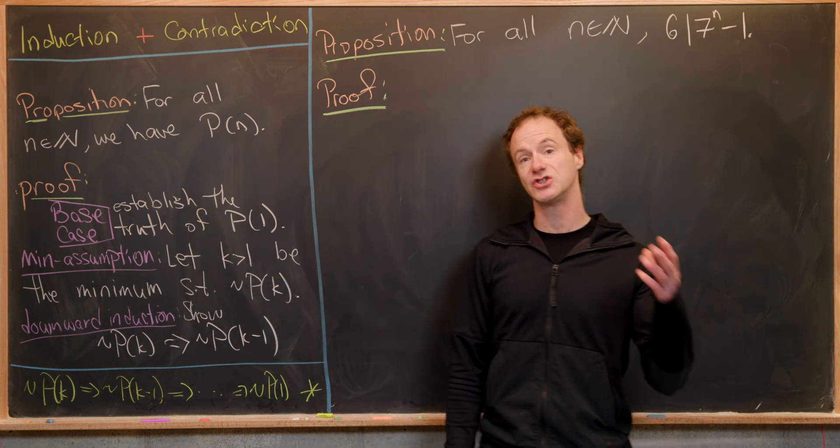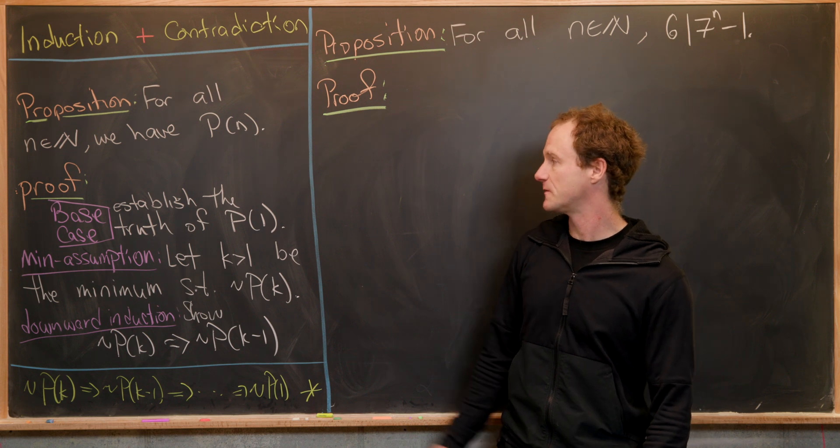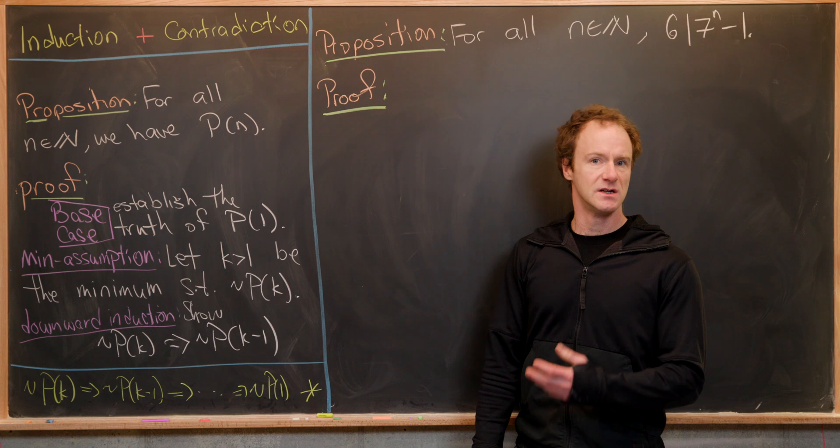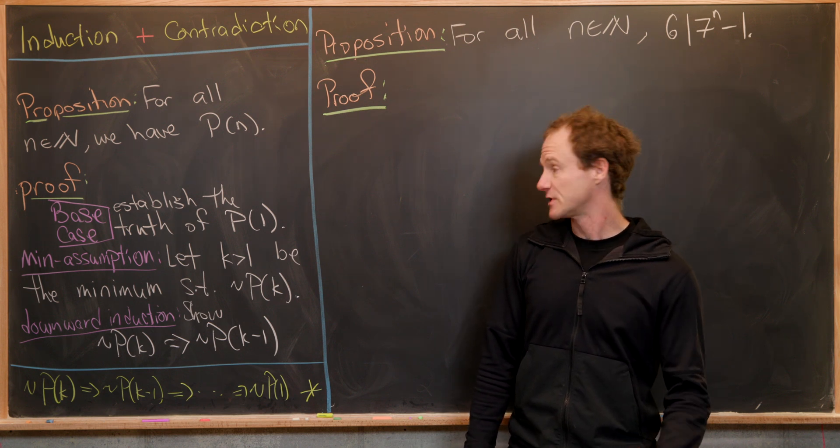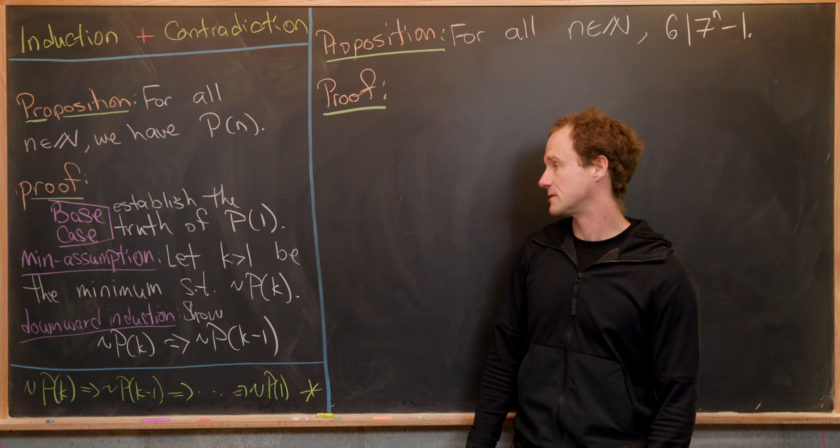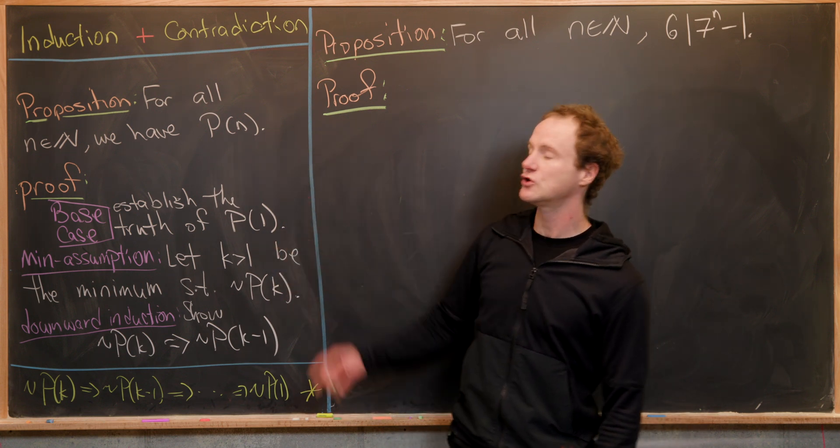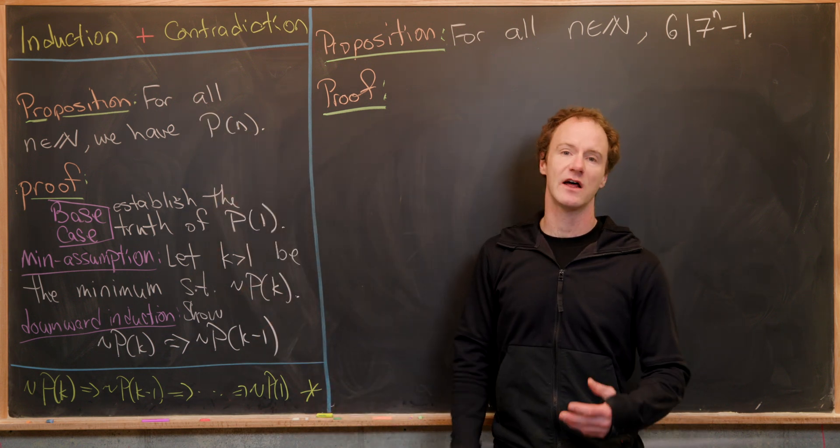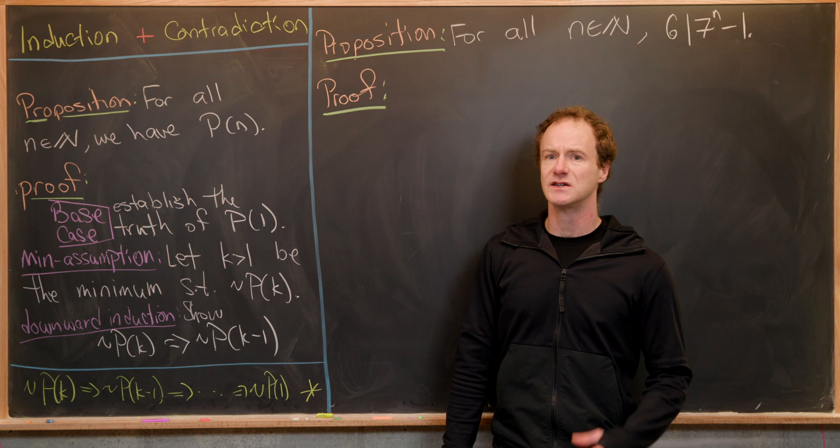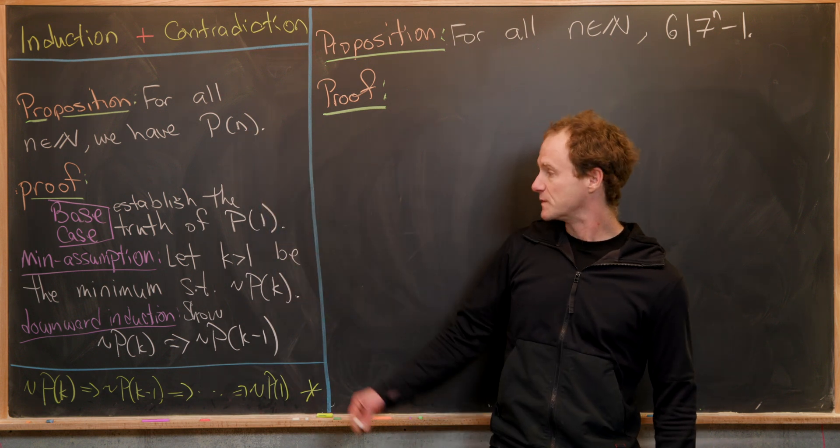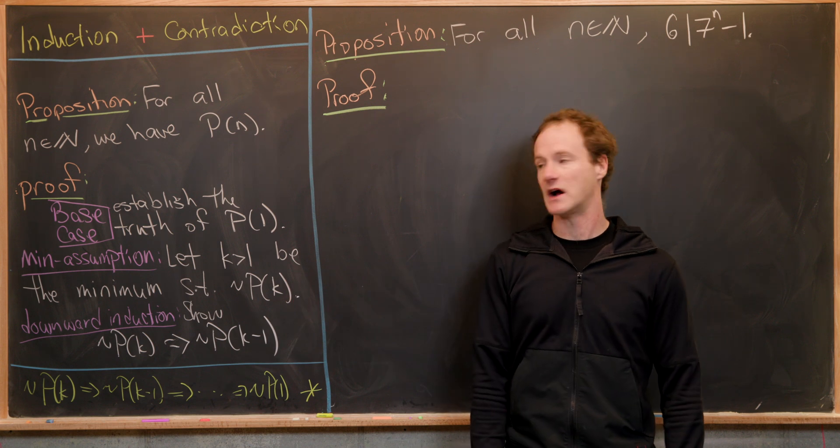You'll start with the base case just like a normal inductive proof—establish the truth of p of one, which is generally pretty simple to check. Then you're going to make this minimality assumption. We're assuming that not for all n in N we have p of n—in other words, there exists some natural number where this is not true. That's built into this outline.